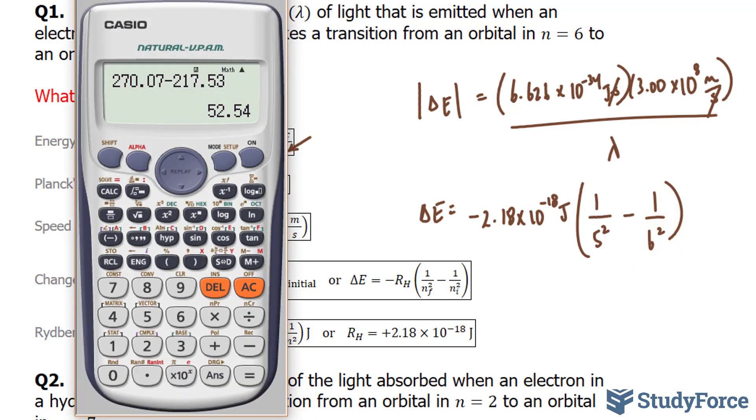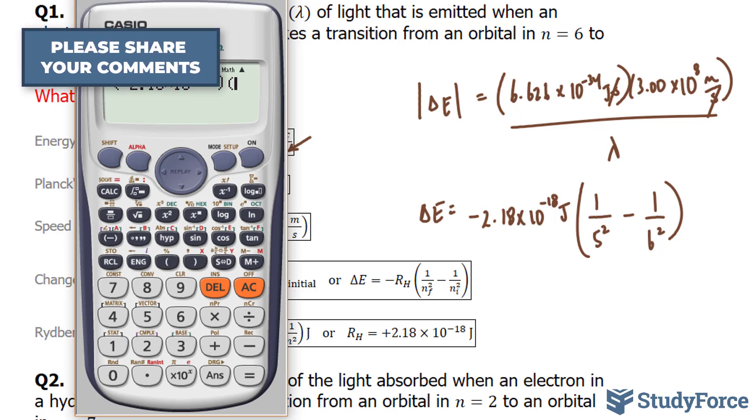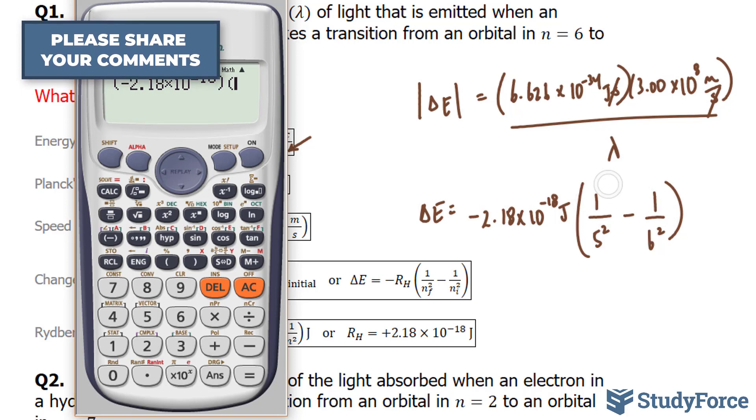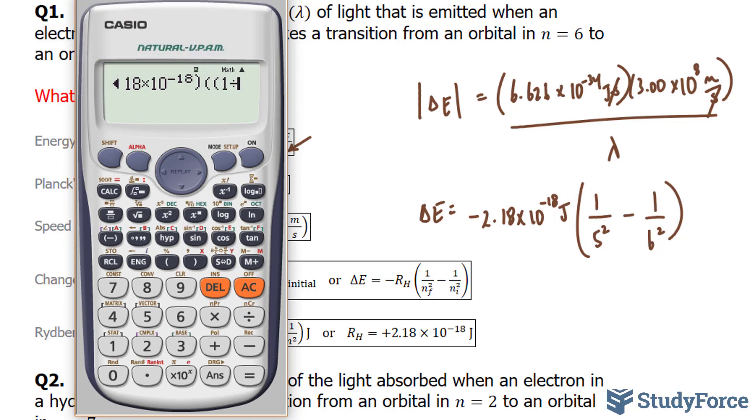Let's go ahead and calculate that. We should end up with a negative number. Negative 2.18 times 10 to the power of negative 18. And this is being multiplied to the expression inside the parenthesis, which is 1 over 25. I took 5 raised to the power of 2 minus 1 over 36. And we end up with negative 2.664 times 10 to the power of negative 21.